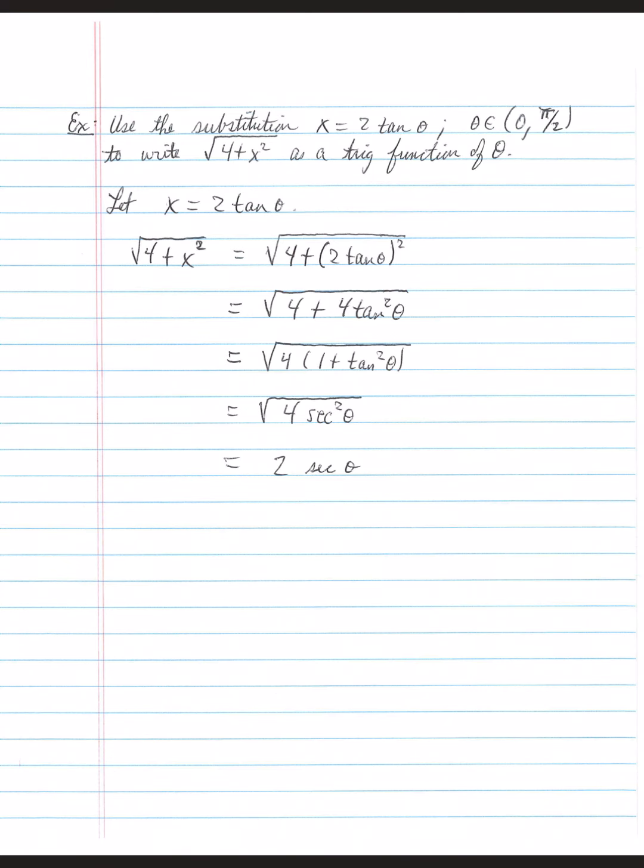When you square it, you get 4, because 2² is 4 tan²θ. 4 + 4 tan²θ has what in common? That's right, a 4. If you factor out a 4, that leaves you 1 + tan²θ. If you were to redistribute, you get those two terms back.